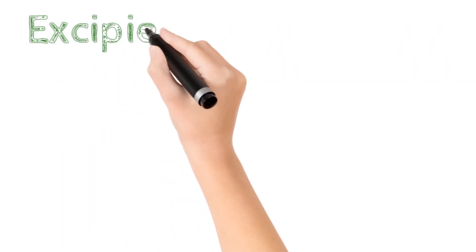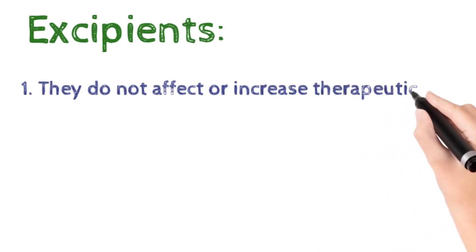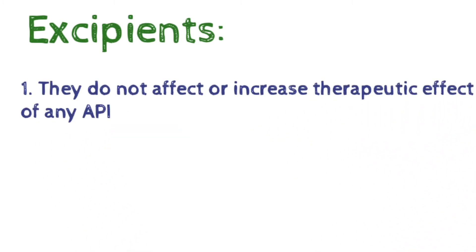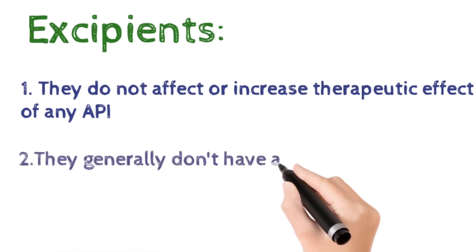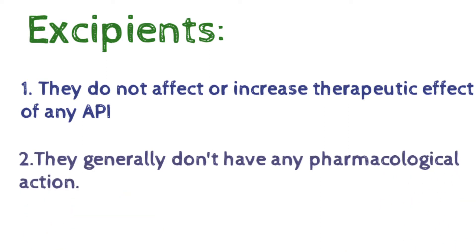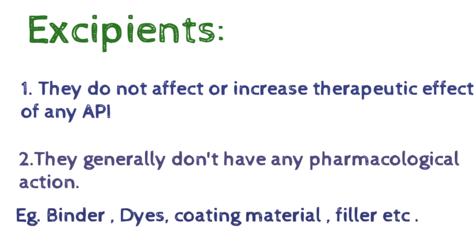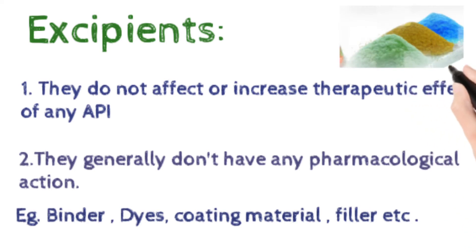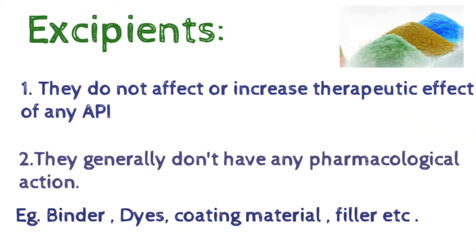Next topic is excipient. What are excipients? What are the needs of excipients? There are various needs. First, they should not affect or increase the therapeutic effect of any API. They should be inert. Second, they should generally not have any pharmacological action. If they have pharmacological action, it will be harmful. Examples are binder, dyes, coating material and fillers. Dyes are used for masking the color. Coating material are used for making drug resistant to gastric acid. And fillers are used for making capsules.